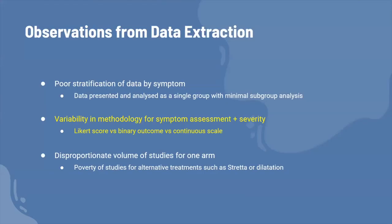There was also a lot of variability in methodology for symptom assessment and severity. Most studies used Likert scores rated zero to four, where zero means asymptomatic and four represents maximum severity. However, some studies used binary outcomes — dysphagia present or absent — while others used a continuous scale, creating great variability and making it difficult to determine where to draw the line as to whether a patient is symptomatic.